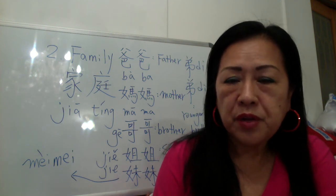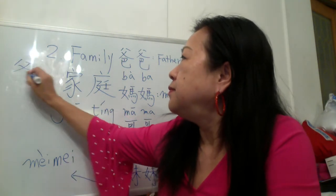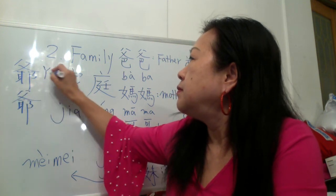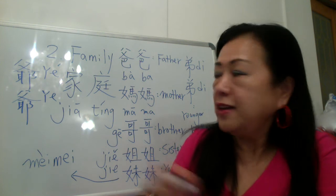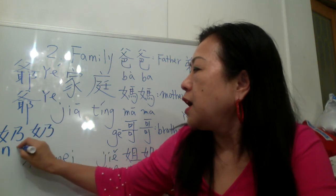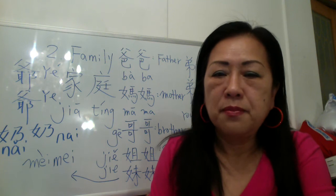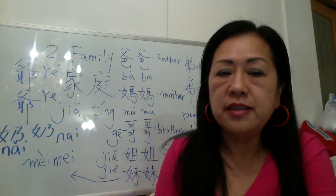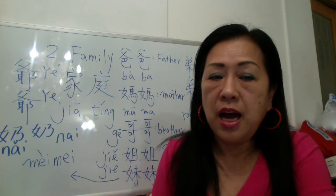If we say grandparent, you say 爷爷 — 爷爷 is grandpa. Grandma is 奶奶. 奶，N-A-I，third tone，第三声，the second 奶 is fifth tone: 奶奶，奶奶，爷爷.